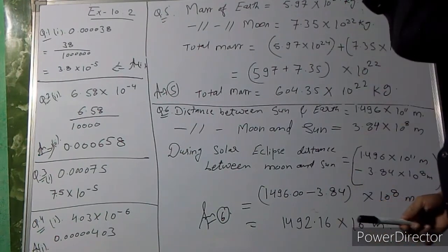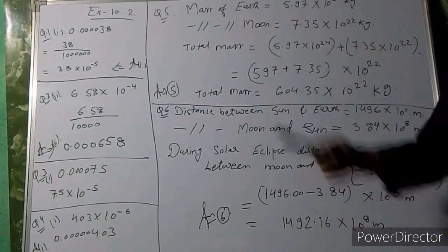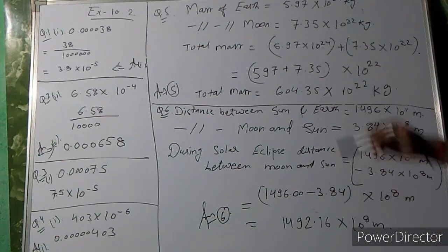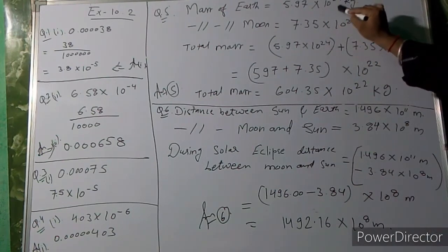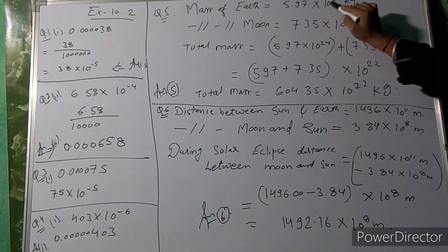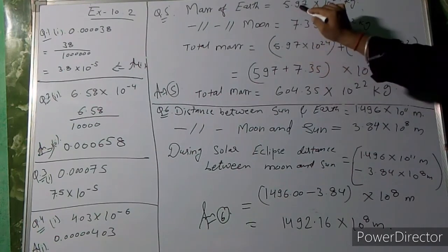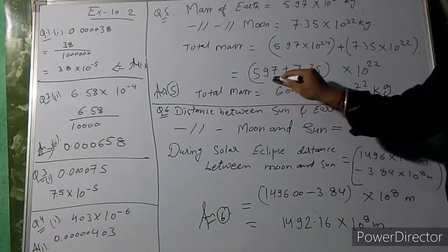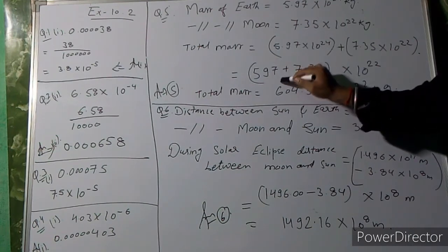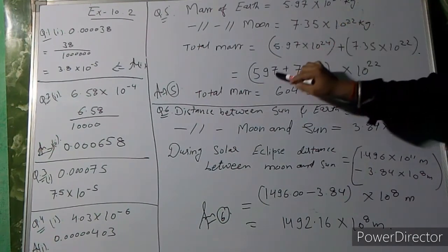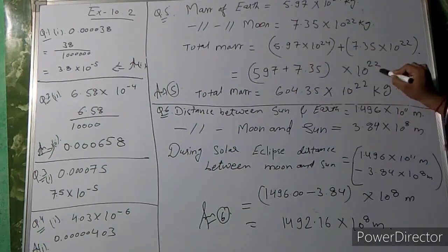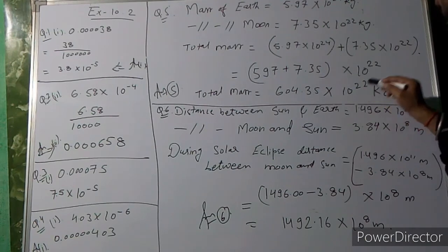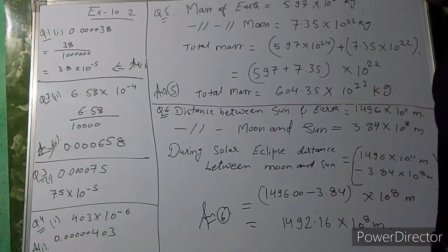Question 5: mass of the moon is 7.35 × 10²² kg. To add this to Earth's mass 5.97 × 10²⁴, the powers must be the same. Convert 5.97 × 10²⁴ to 597 × 10²², which is 5.97 × 10² × 10²² = 597 × 10²². Then add: 597 + 7.35 = 604.35. Taking 10²² common, the total mass is 604.35 × 10²² kg.